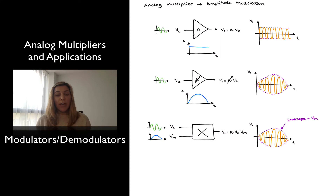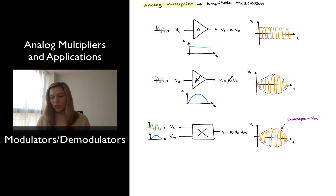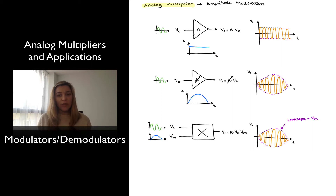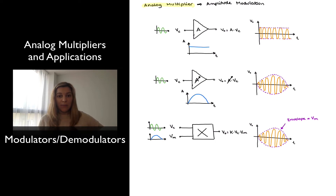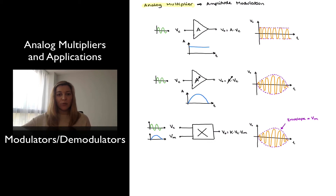We're going to take a look at how we can use an analog multiplier to perform one of the most basic modulation schemes, which is amplitude modulation. I've drawn three circuits here to illustrate the process and how it is a multiplicative process. In the first one, I have drawn an amplifier with a constant gain where I feed a signal labeled VC — my carrier signal — which is a high-frequency periodic signal. It runs through my amplifier with constant gain A, so the output is A times my carrier signal, giving an output signal with a constant envelope whose amplitude is A times the amplitude of the input carrier signal.